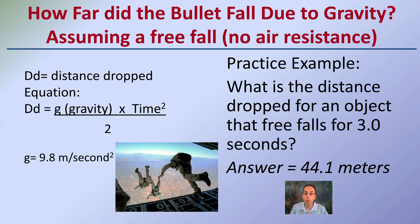Keep in mind, we're going to use the constant for gravity at 9.8 meters per second squared. So in my practice example, what is the distance dropped for an object that free-falls for 3.0 seconds?